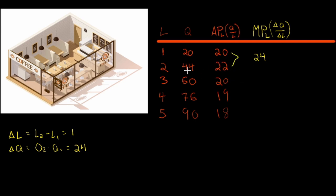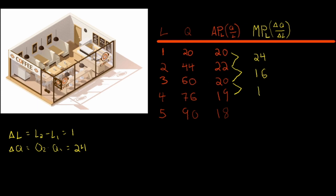Going from 2 to 3 workers: change in workers is 1, change in output is 16 — marginal product of 16. From 3 to 4 workers: again change in workers is 1, marginal product is 16. From 4 to 5 workers: change in workers is 1, marginal product is 14.